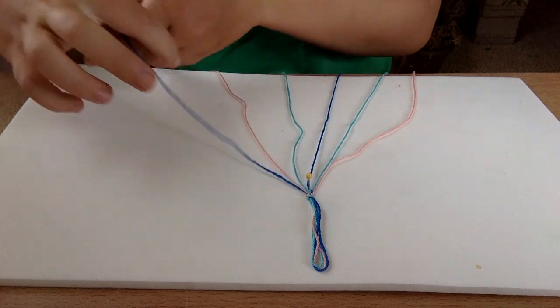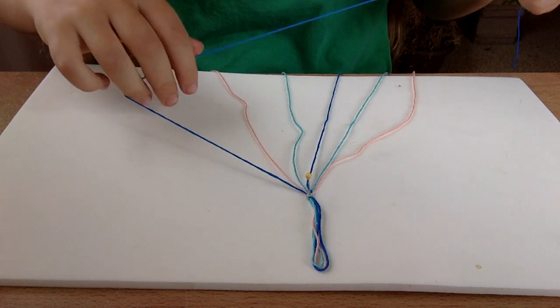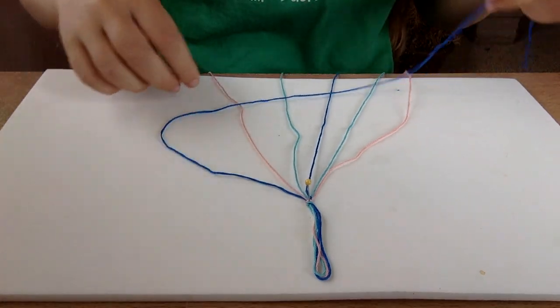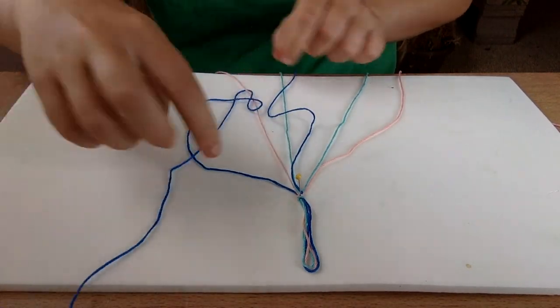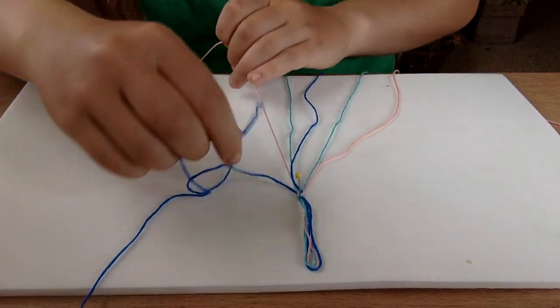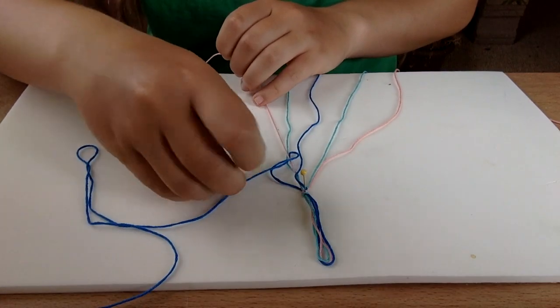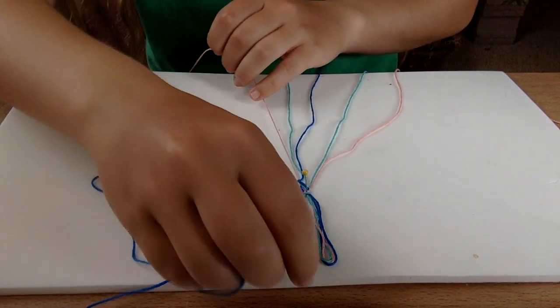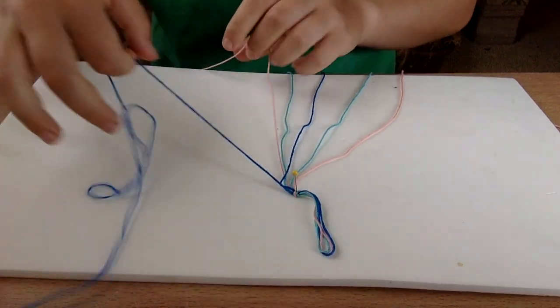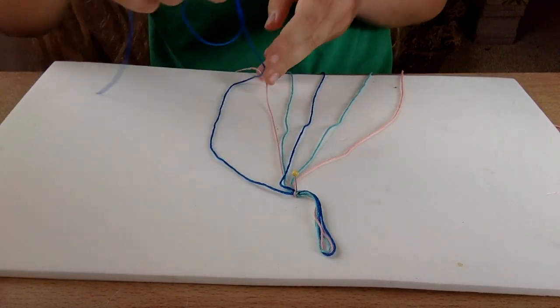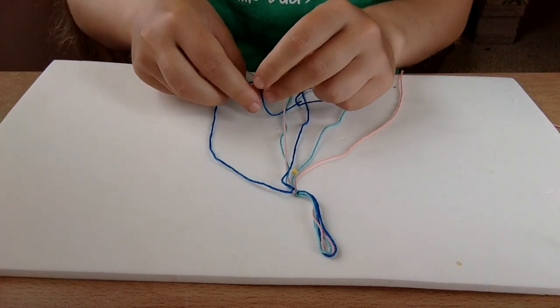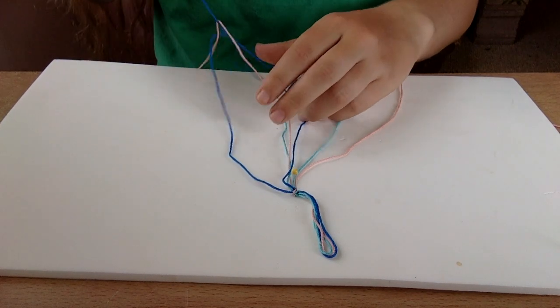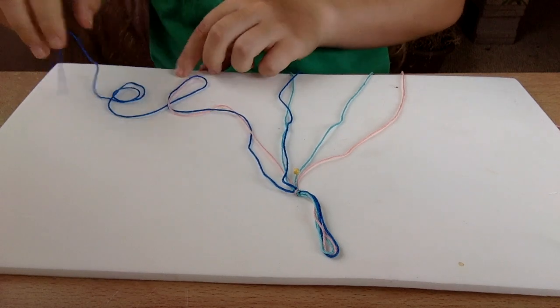So, on the other side, we're going to make a backwards knot. So, we make a P, and then tuck the tail through, and pull. And then, we make another P, tuck the tail through, and pull.